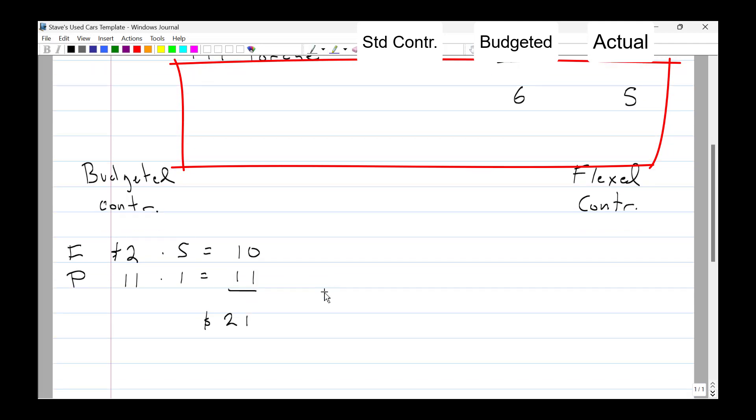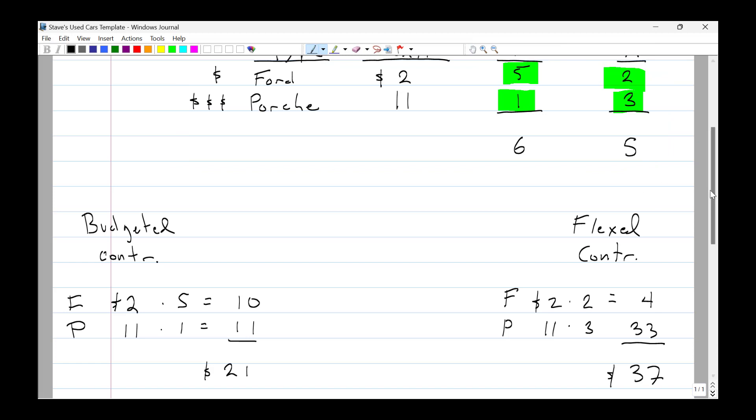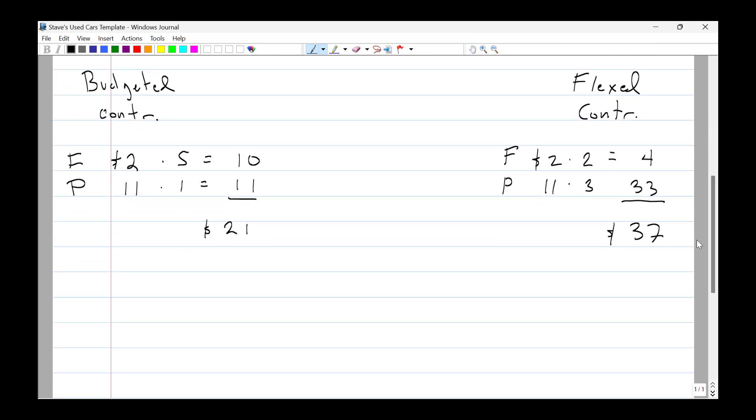Next step, let's calculate the flexed contribution. All we're going to do is take our original budget, which was to sell Fords and Porsches. Standard contribution remains 2 and 11, and we just use the actual units, which are 2 and 3. So if we do the math, the difference between these two numbers is the sales volume variance. And the contribution is higher, so we know that it is favorable. So we see that that is a $16 favorable.